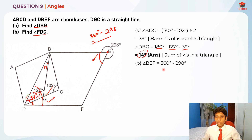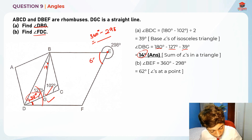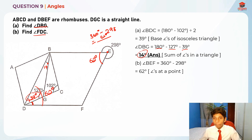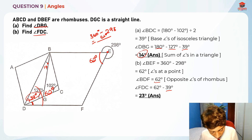First, BEF equals 360 degrees minus 298 degrees, which gives us 62 degrees — using angles at a point. So BEF is 62 degrees. Because opposite angles are equal in a rhombus, BDF is also 62 degrees. In order to find angle FDC, we take 62 degrees minus 39 degrees, which gives us the answer: 23 degrees.